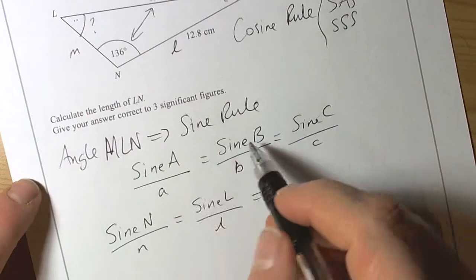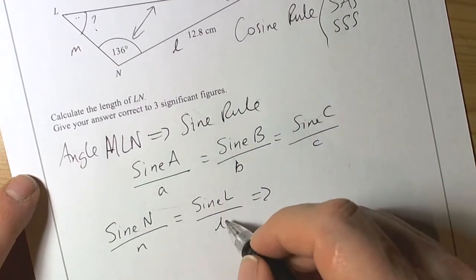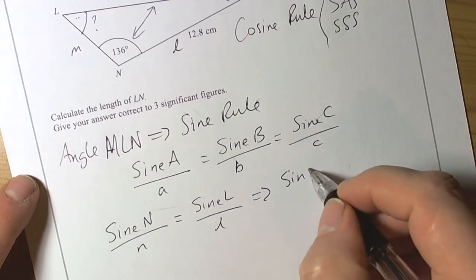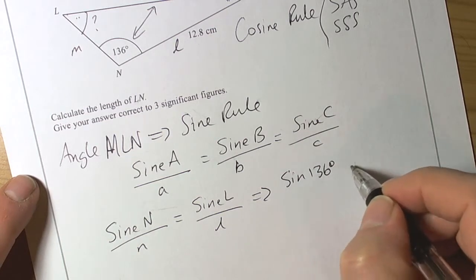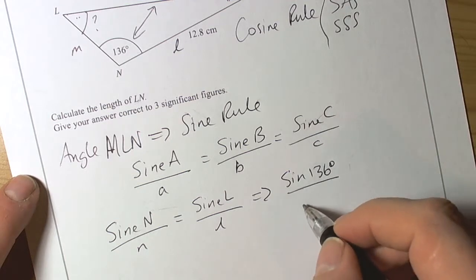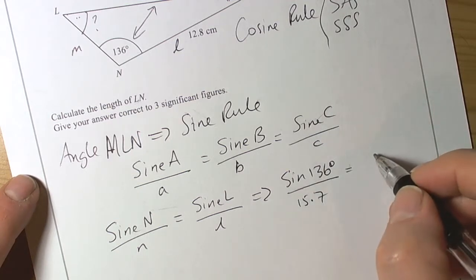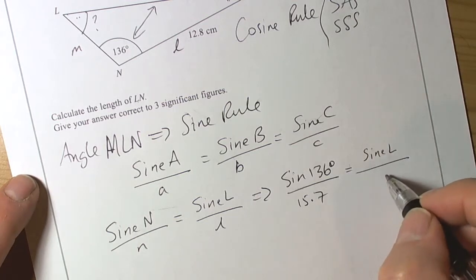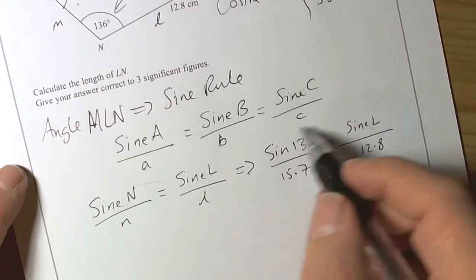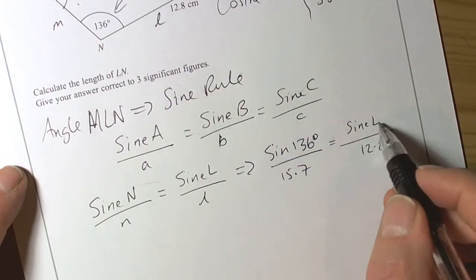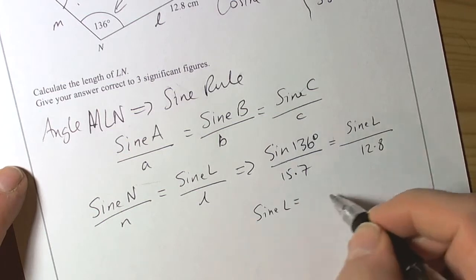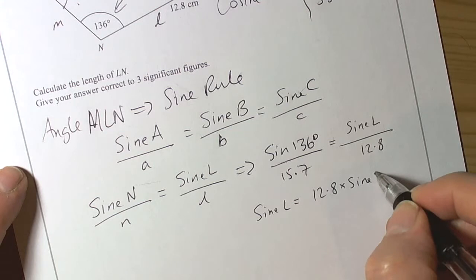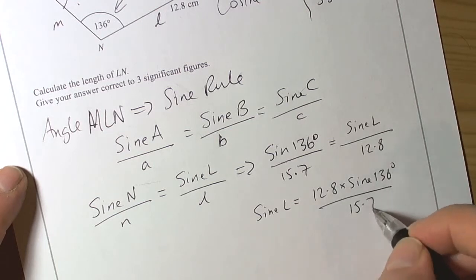So we can put our numbers in to find the angle we want. The sine of N is the sine of 136 degrees over the length of little n, and that equals the sine of big L over the length of little l. We rearrange this to get: sine of L equals 12.8 times sine of 136 divided by 15.7.